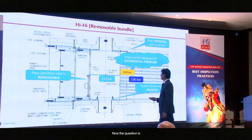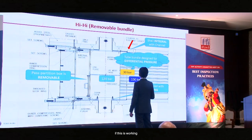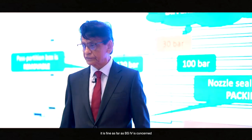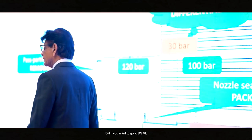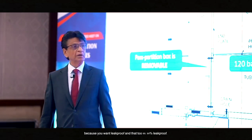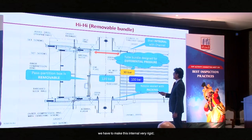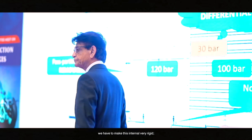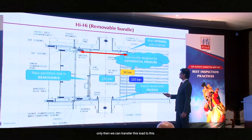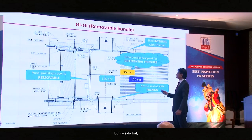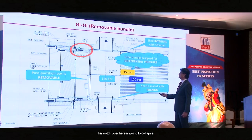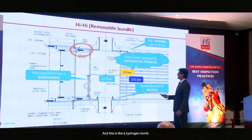Now the question is: this is working fine as far as BS4 is concerned, but if you want to go to BS6 it becomes an impossibility, because you want it leak proof — 99.99 percent leak proof — and we even do helium tests to verify that. If that happens, we have to make this internal very rigid. Only then can we transfer this load and make it that much leak proof. But if we do that, this notch over here is going to collapse, and this is like a hydrogen bomb.